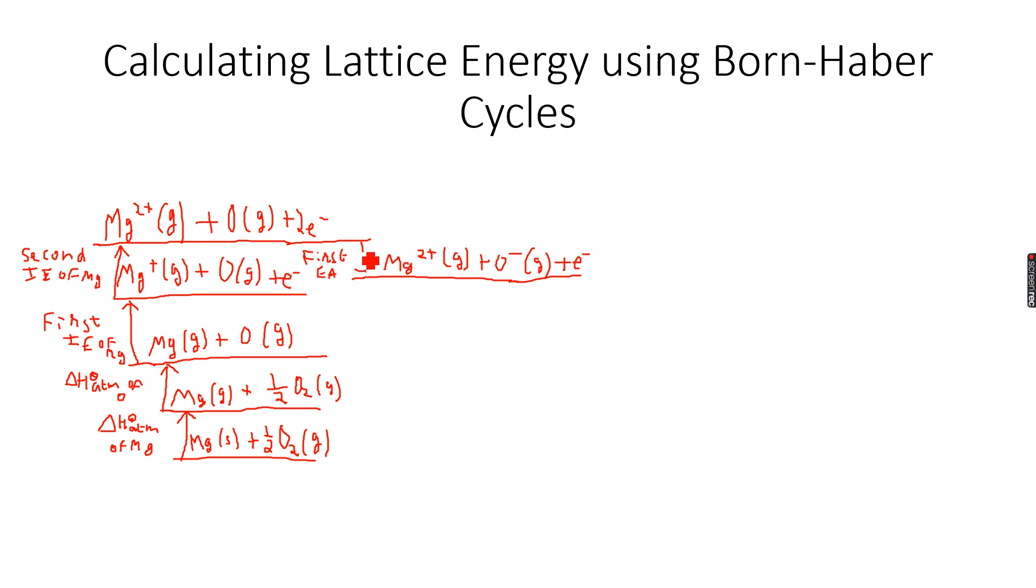Now we know that first EA is mostly exothermic. Now we go up again because this time it's second electron affinity. So Mg2+ gas plus O- gas. So this is the second electron affinity. And as I said, second electron affinity is usually endothermic. So now we have to give energy again. First energy was released and now energy has been taken in again.